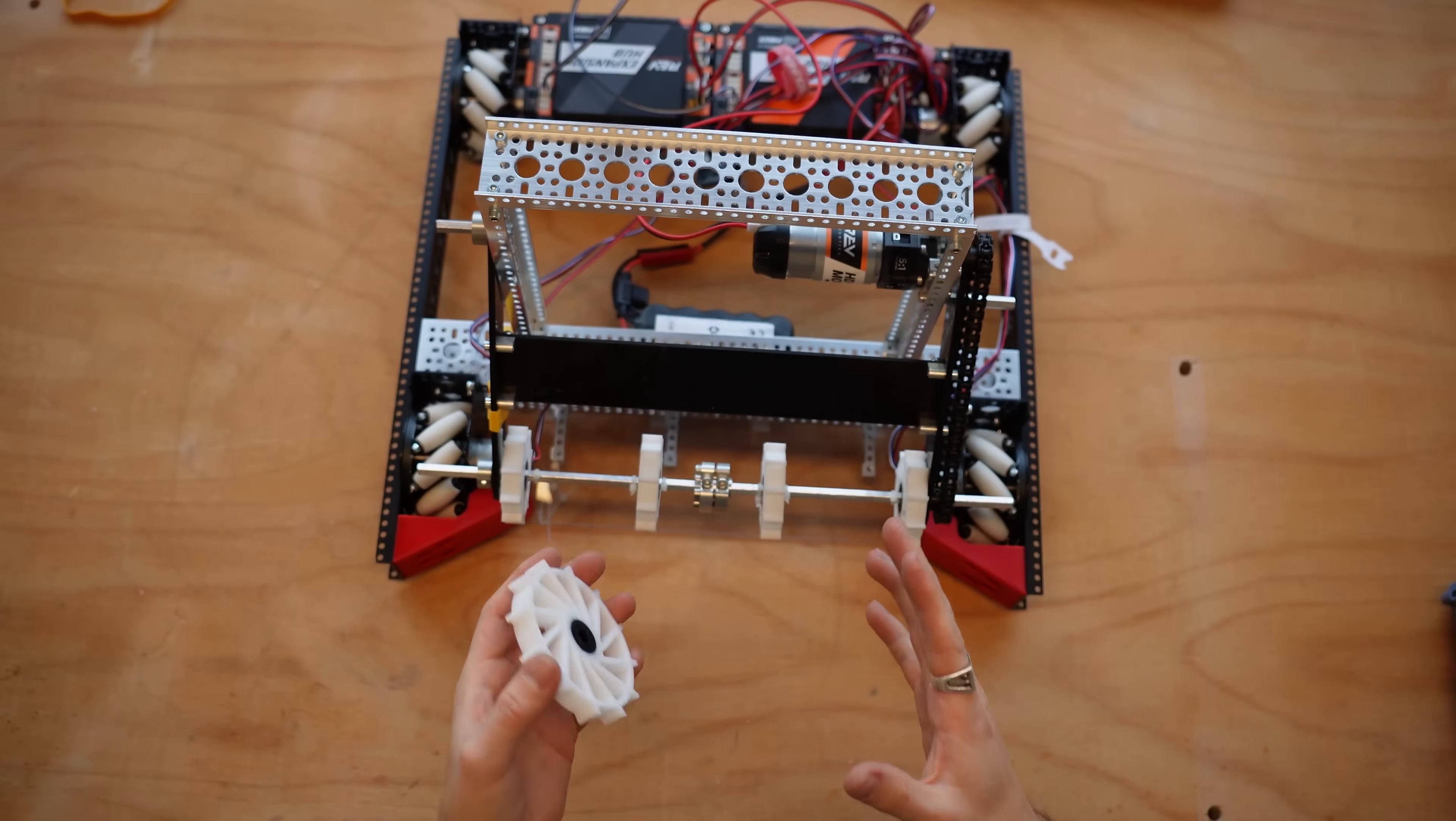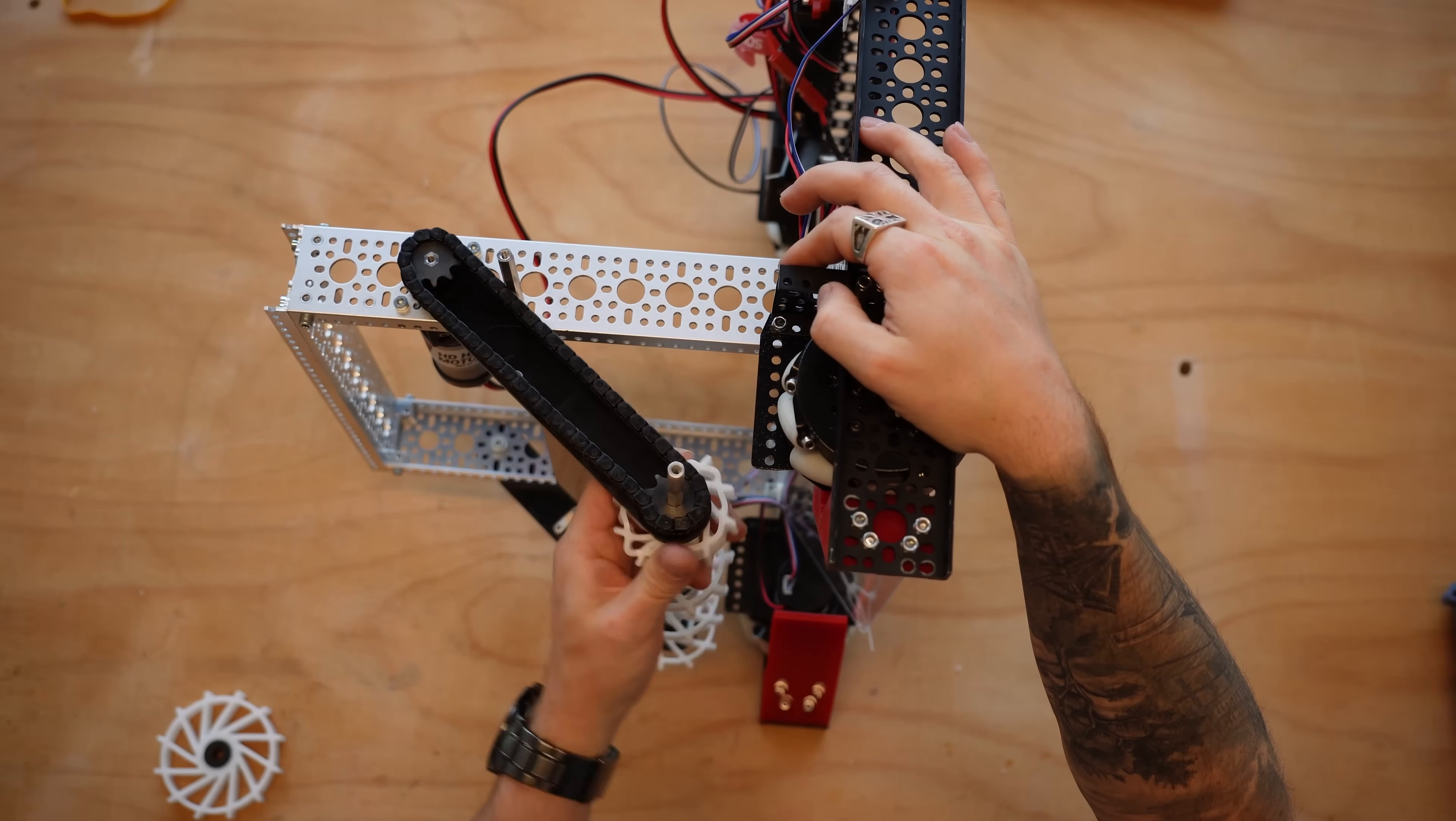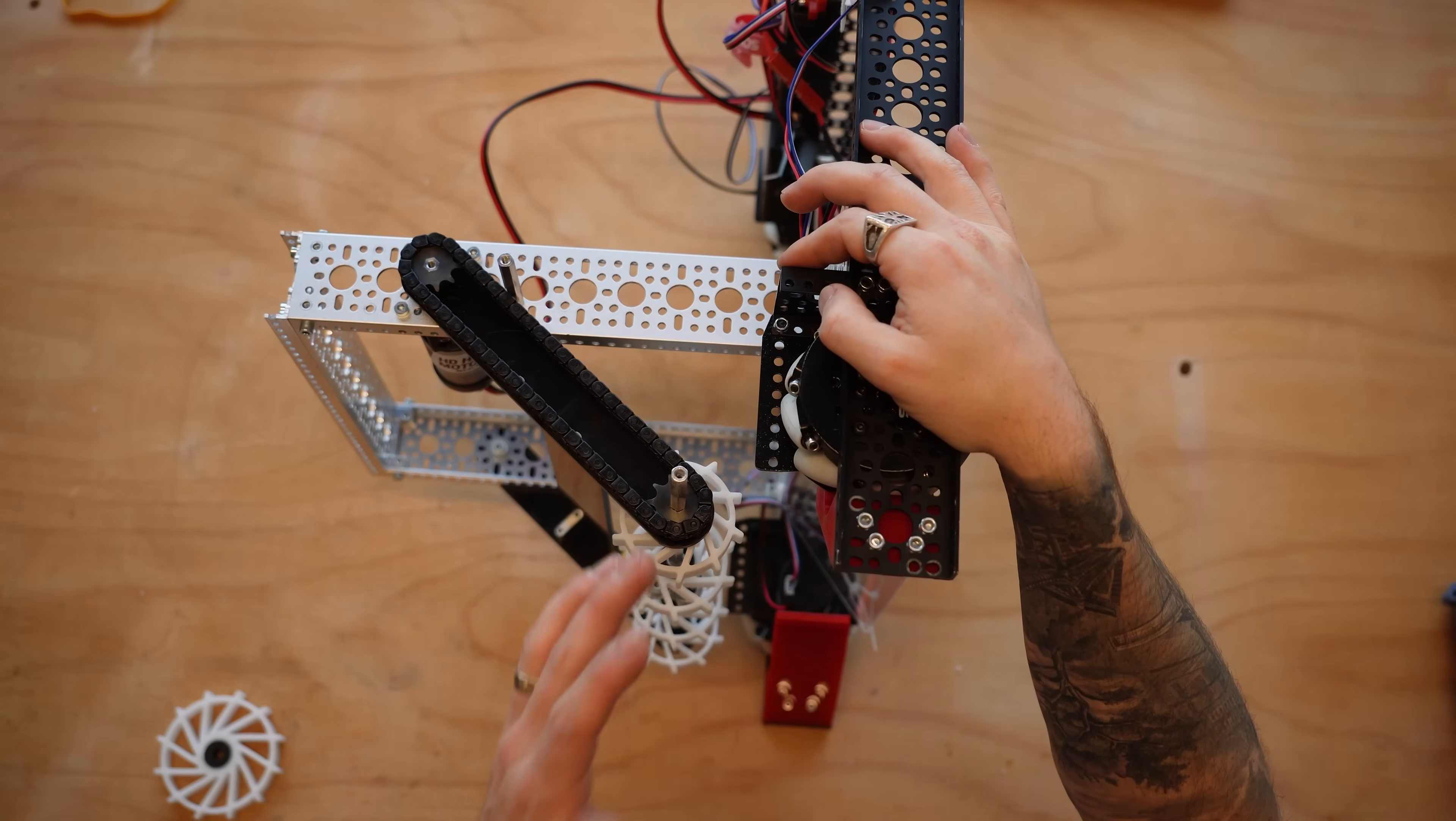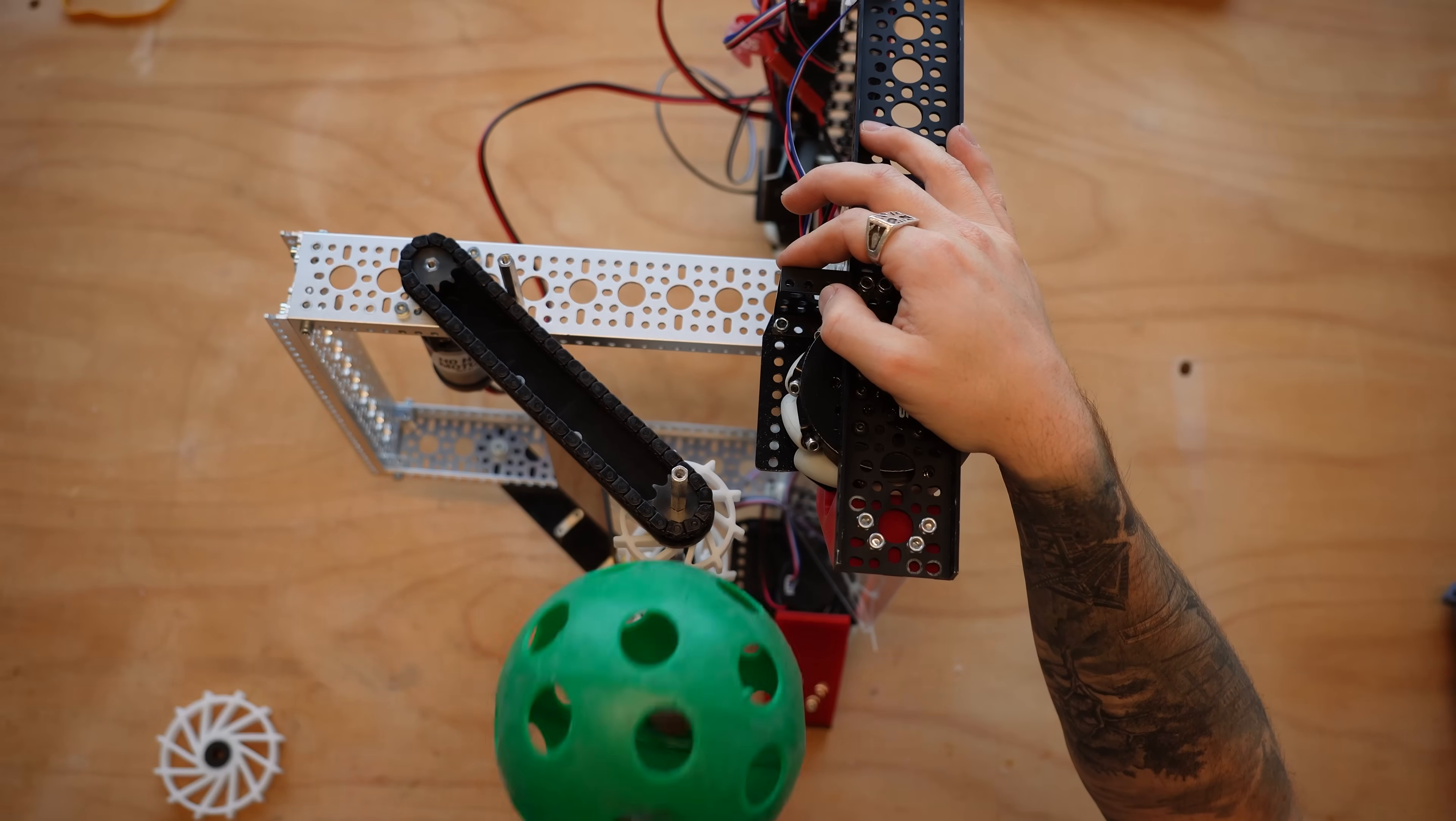So the real purpose of a compliant wheel intake, what it does well is when these wheels start spinning quite quickly, you're able to funnel an object up and into your robot. Now on this design here, this is actually almost a bit of a double compliance, because if I were to grab an artifact or a ball like this, and were to grab it in...